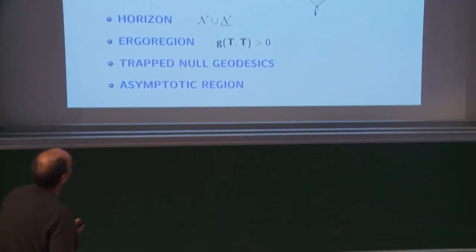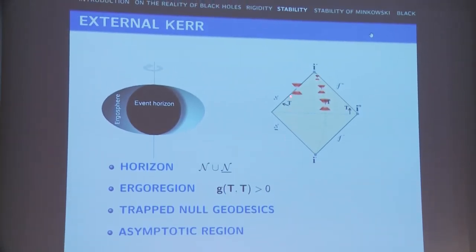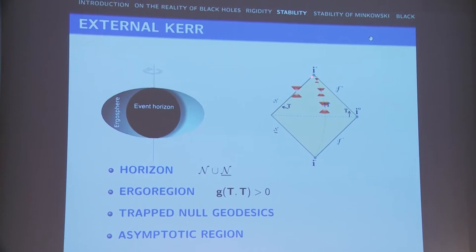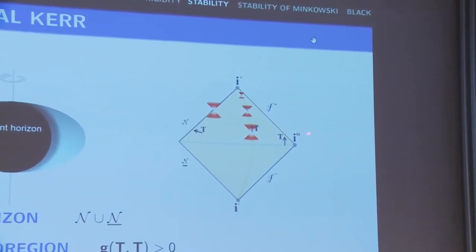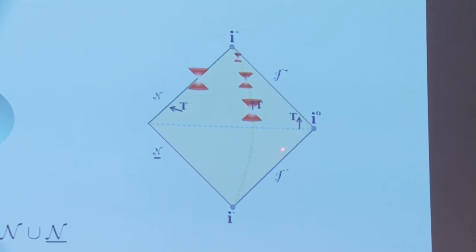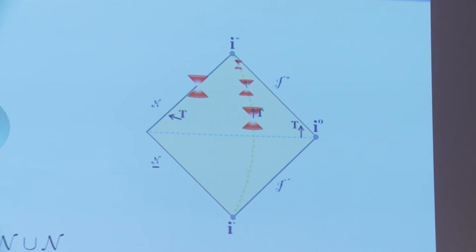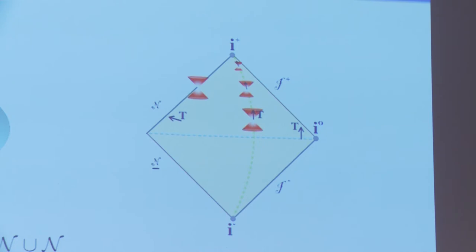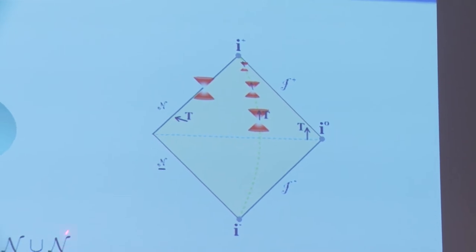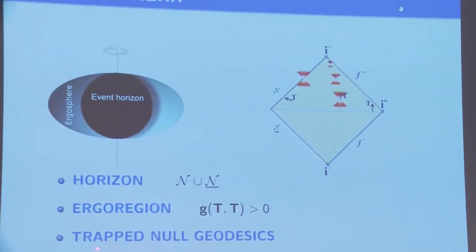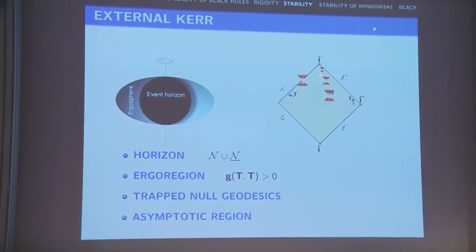In the exterior, you see the horizon and null infinity (scri). The vector field t corresponds to stationarity and is d/dt in Boyer-Lindquist coordinates. As you approach the horizon, t actually becomes spacelike, which leads to all sorts of physical and mathematical phenomena. Another important feature is the presence of trapped null geodesics — geodesics that sit in a region of bounded r for all time, neither going to infinity nor into the black hole.